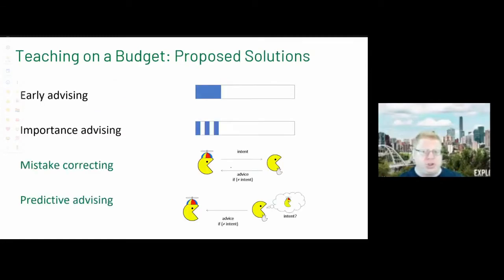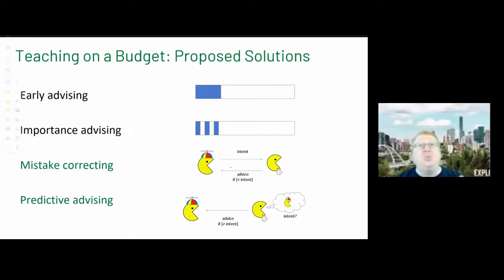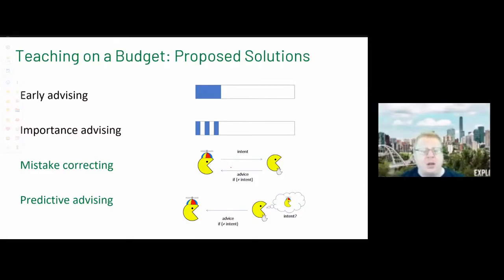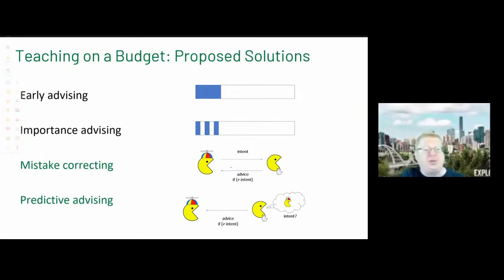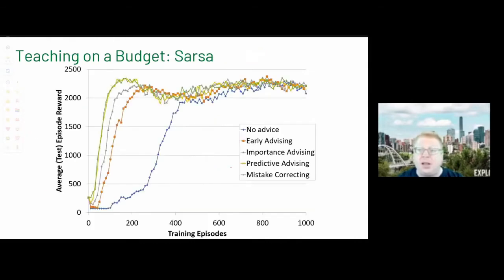How should a teacher allocate limited advice? The simplest approach: early advising — use the entire budget at the beginning when the student is most confused. Importance advising has the teacher pick states where it matters most, using the difference between the teacher's best and worst Q-value actions as a heuristic: if doing the wrong thing leads to death versus making little difference, that's an important state to intervene.